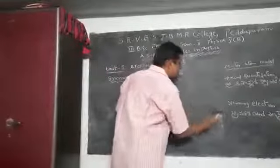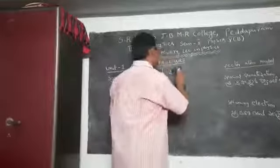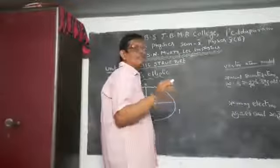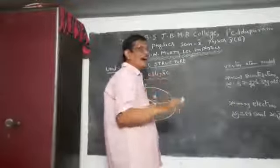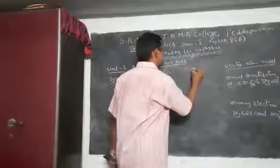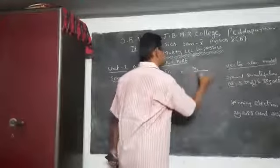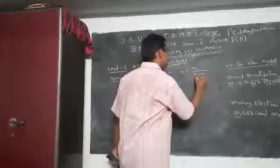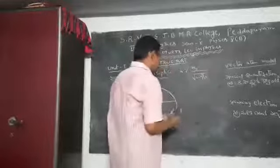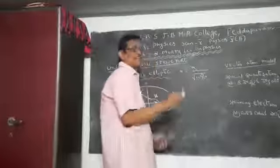He believed that mass varies with velocity. Suppose an electron is moving with velocity v and its rest mass is m₀. Then the mass of the electron m is equal to m₀ divided by the square root of 1 minus v² by c². This is termed as Sommerfeld's relativistic correction.